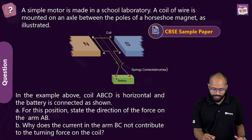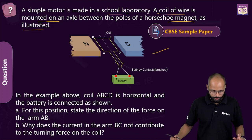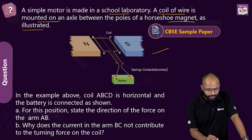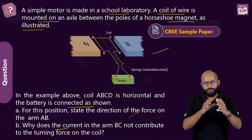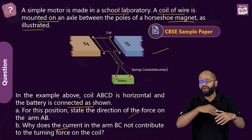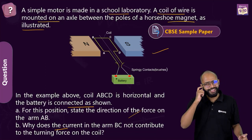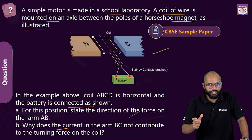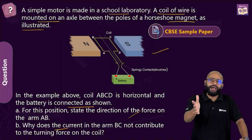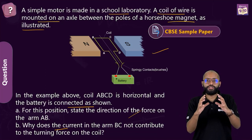This is 2020 and 2022. NCERT exercise also has the same question — draw the labeled diagram of electric motor, explain its principle and working, what is the function of split ring in an electric motor. And this year's sample paper also had it: a simple motor made in a school lab, a coil of wire mounted on an axle between poles of a horseshoe magnet — state direction of force on arm AB, why does current in arm BC not contribute to turning force. There are hundreds of questions you can form on this one topic.